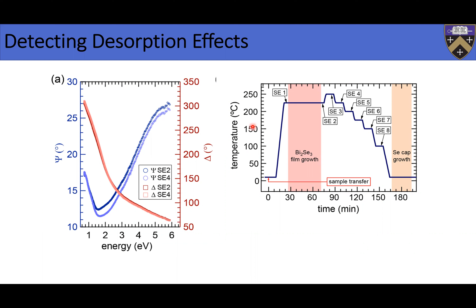Let's take another look. If you start with SC2 — taken at 225°C — take it to 250°C and come back to SC4 at 225°C again, you should see the same psi and delta because they're at the same temperature. But you can see the delta is approximately the same while the psi is vastly different. This tells us that probably some of the bismuth selenide film is evaporating — that's what we're seeing.